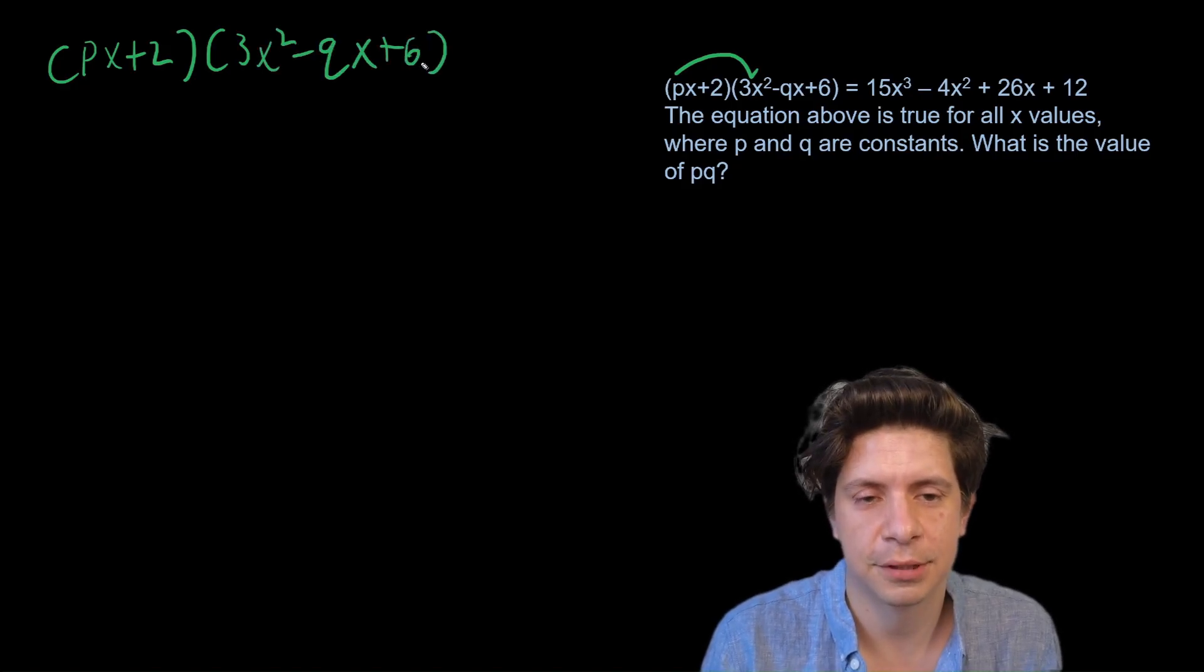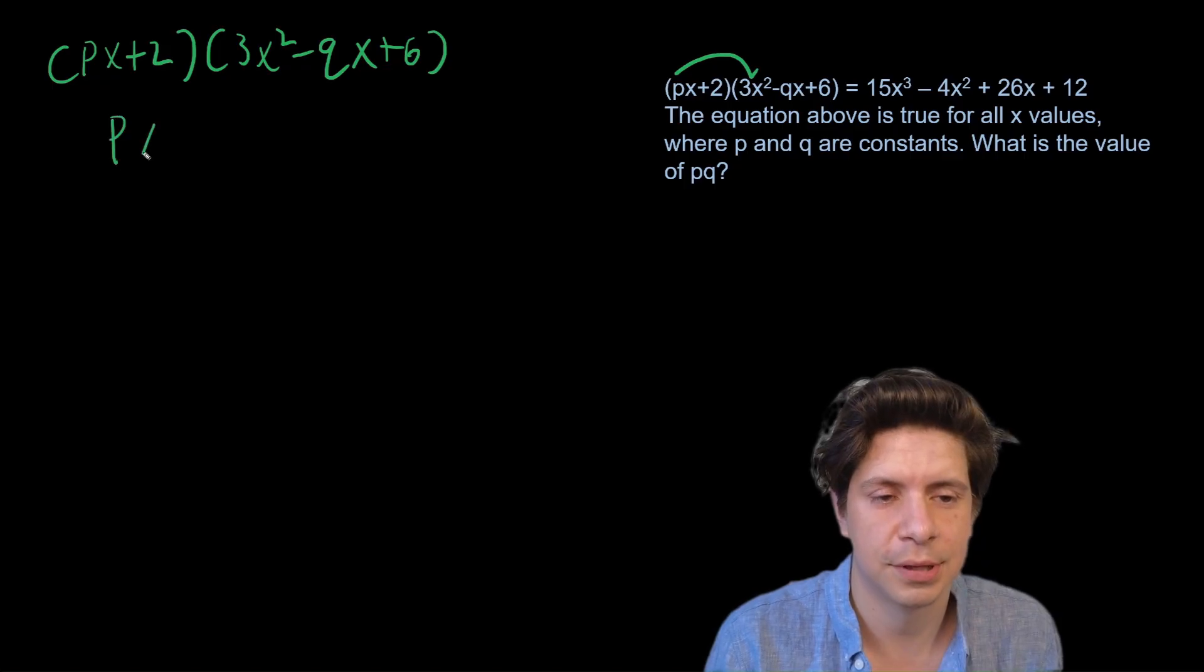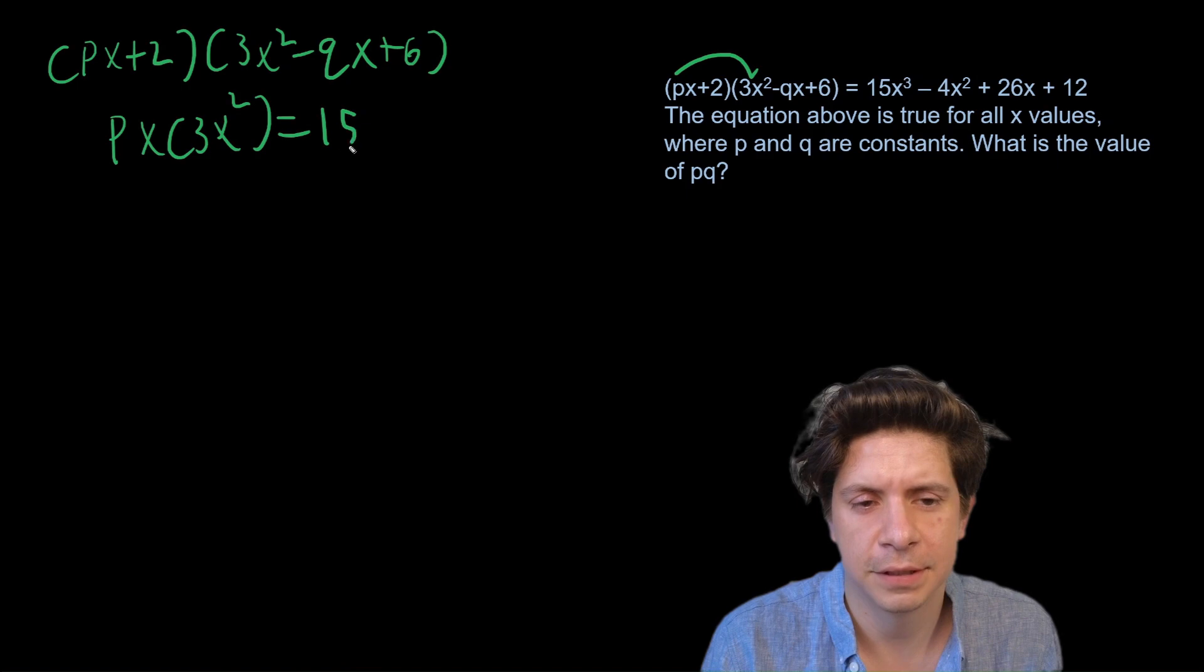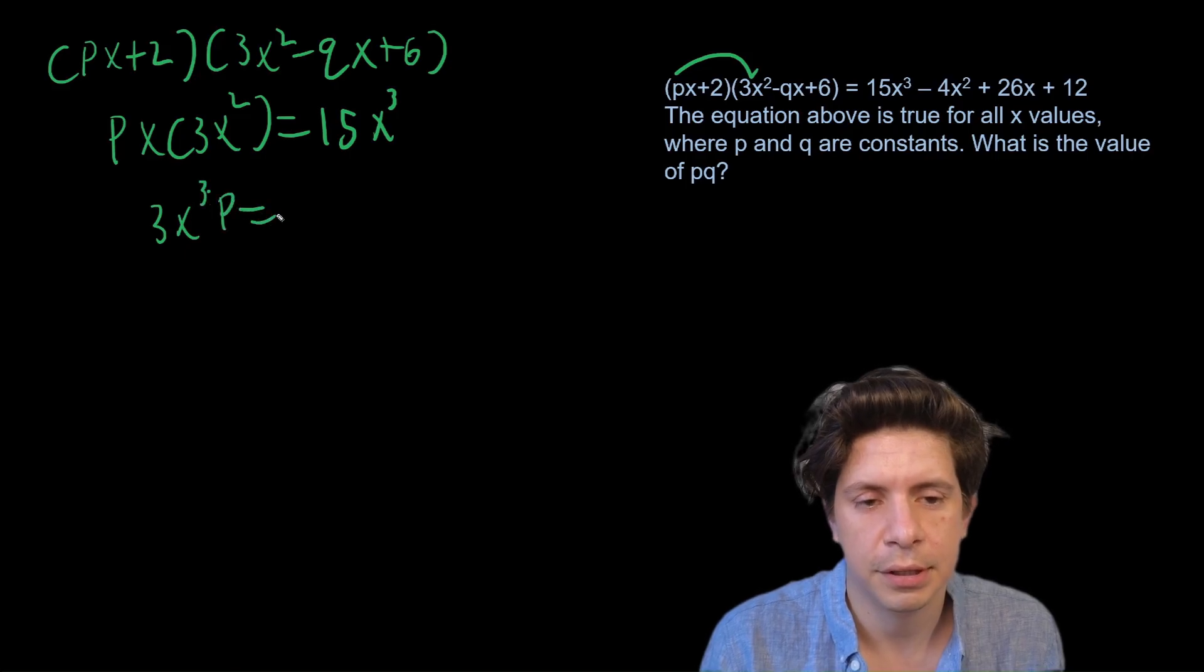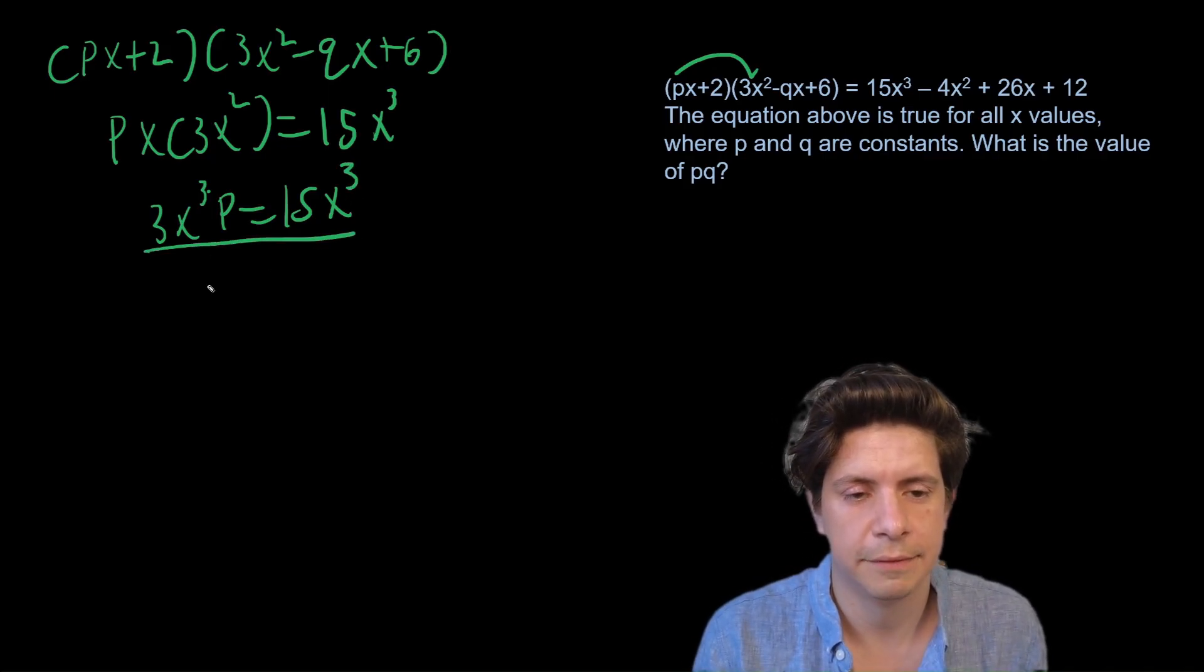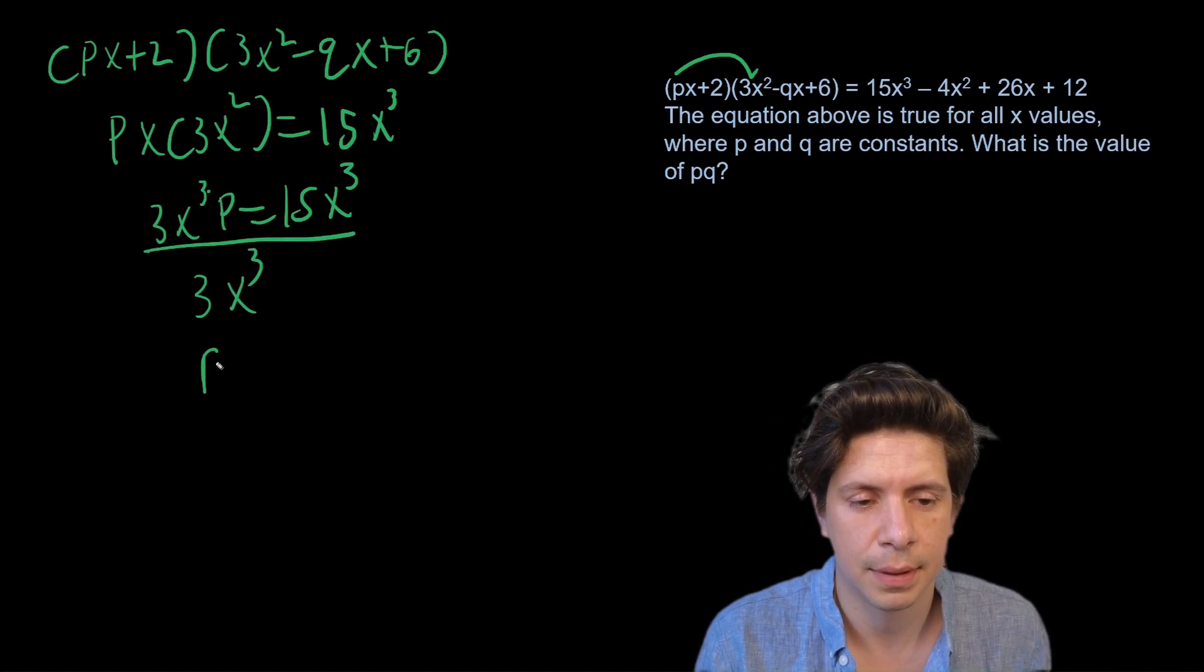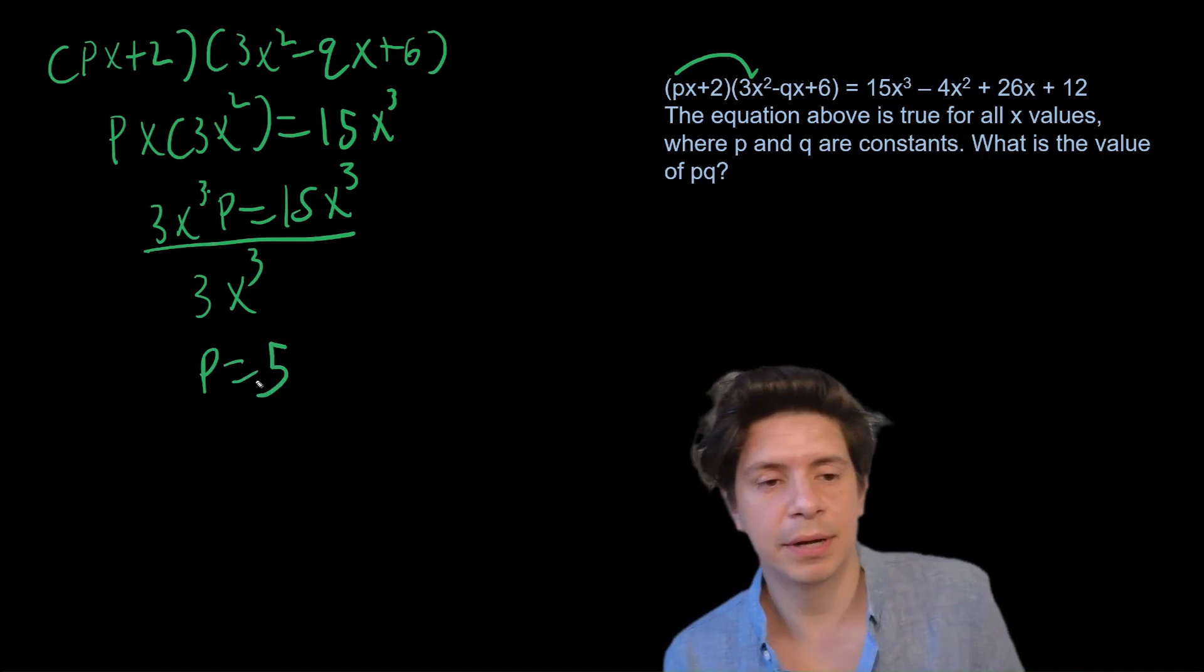It's like this: (px+2). This one's a common one that I go over with students because it's not too bad, but it is tricky the first couple times you see it. So px times 3x² equals 15x³. Let's do that. Divide by 3x², so we have 3x²p equals 15x³. Divide by 3x², p equals 5.